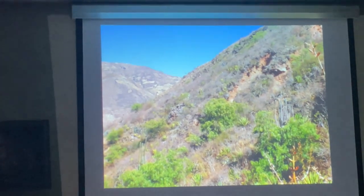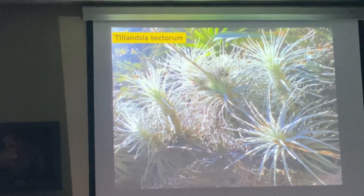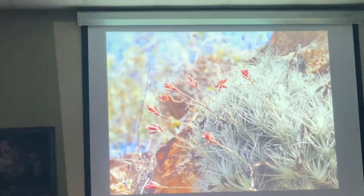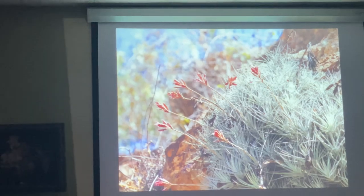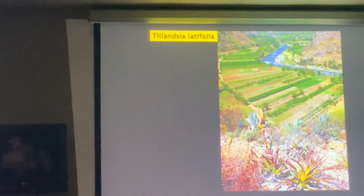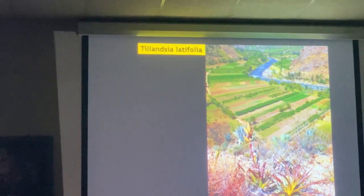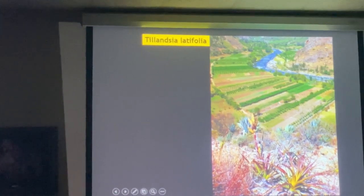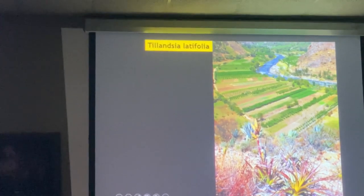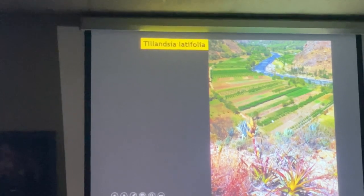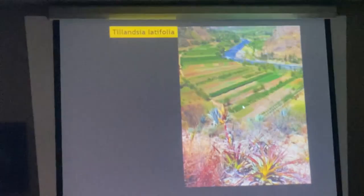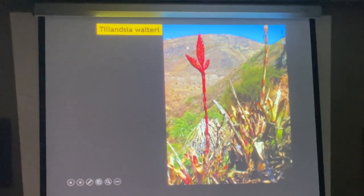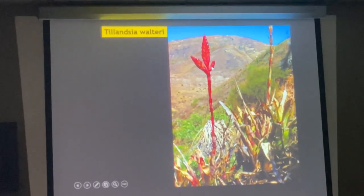Pictures from around Huaraz — yet another population of Tillandsia tectorum, very hard to reach; you have to do an actual climb. Tillandsia latifolia, and you can see next to the river how locals use irrigation and have many crops growing there. Tillandsia valteri with an inflorescence that has split — that's not common.